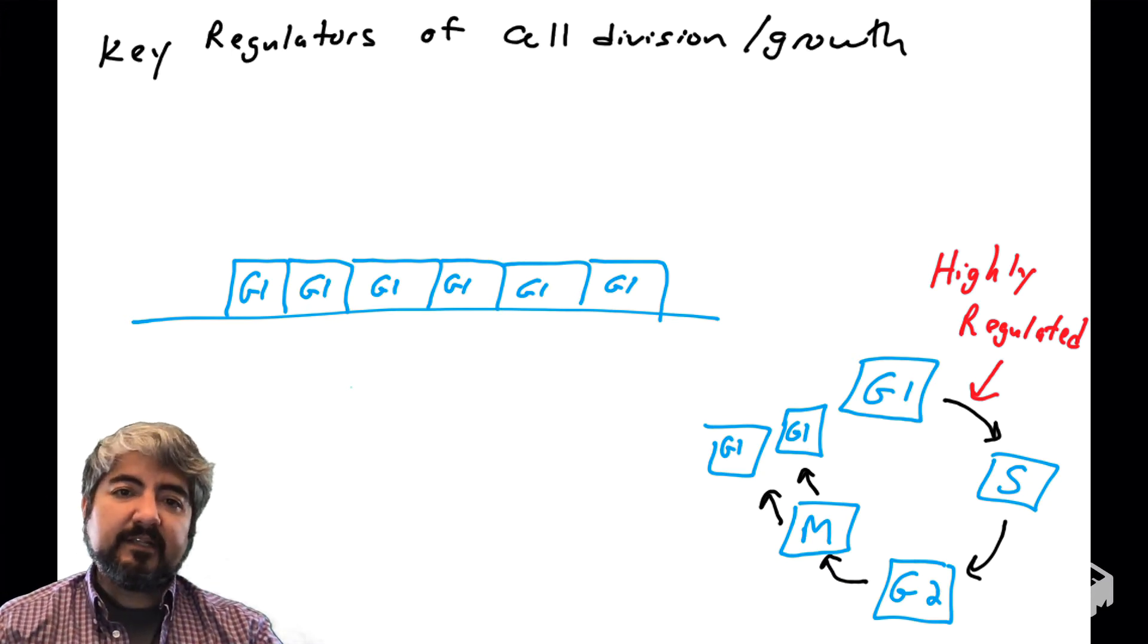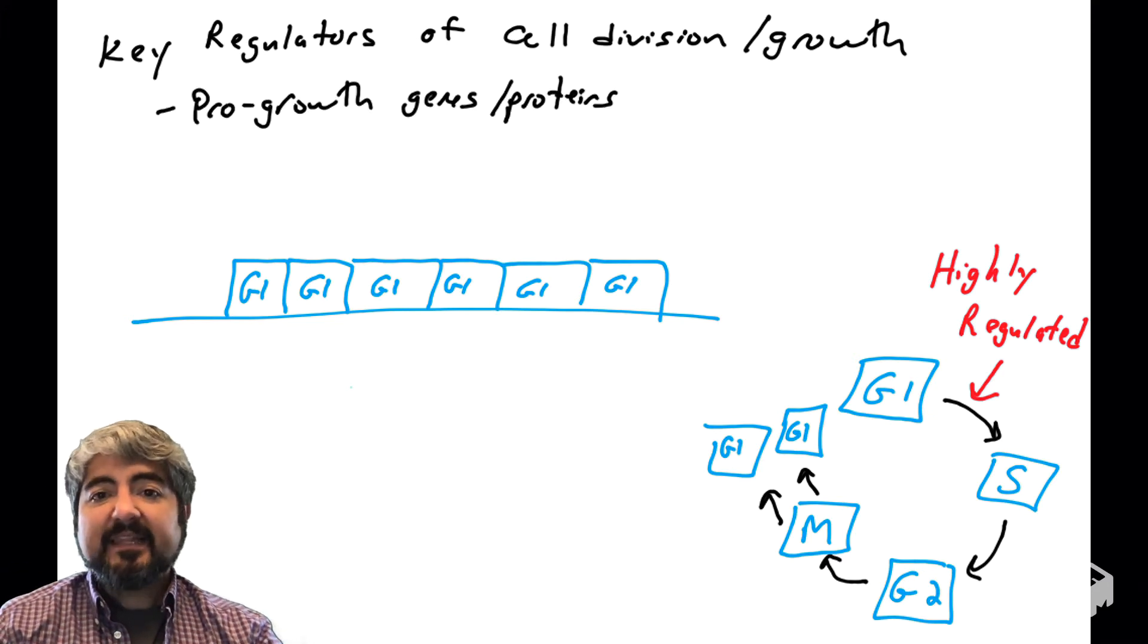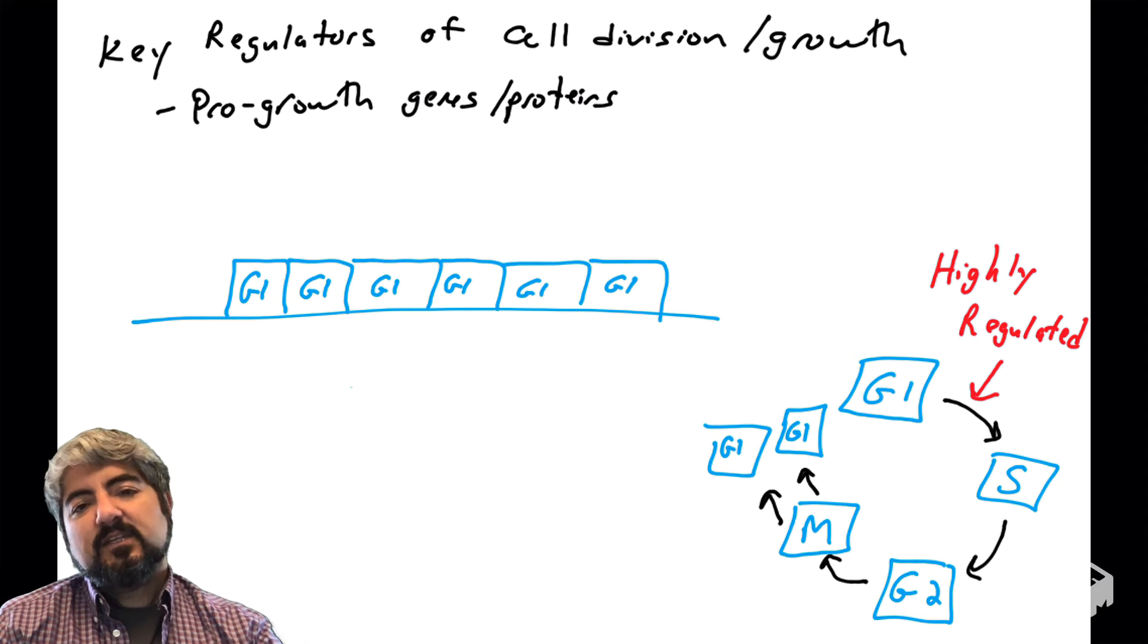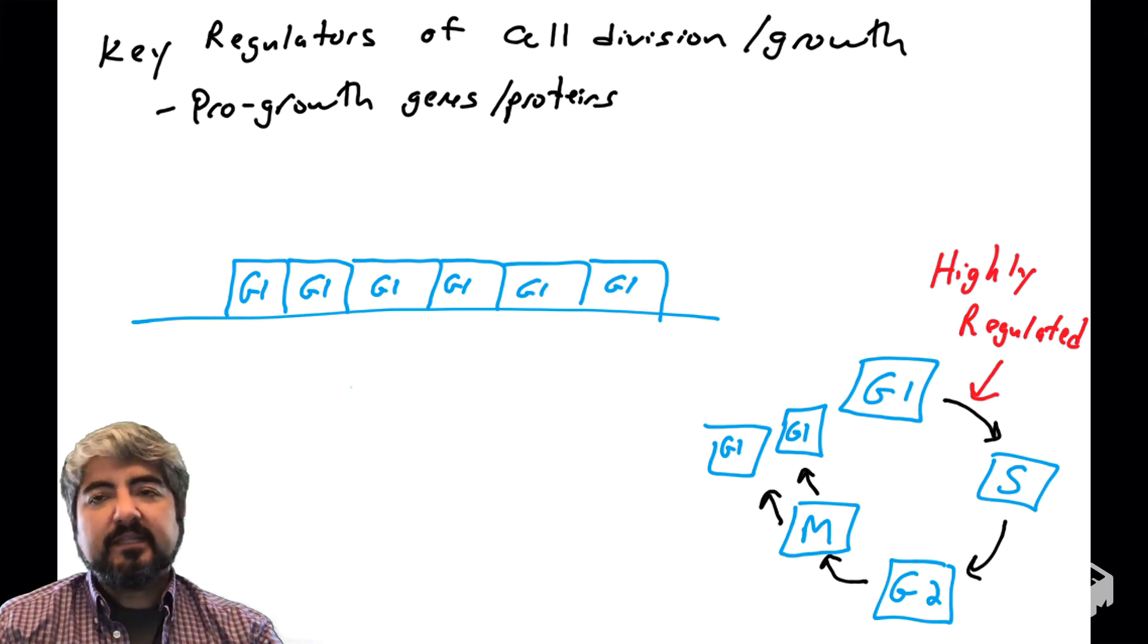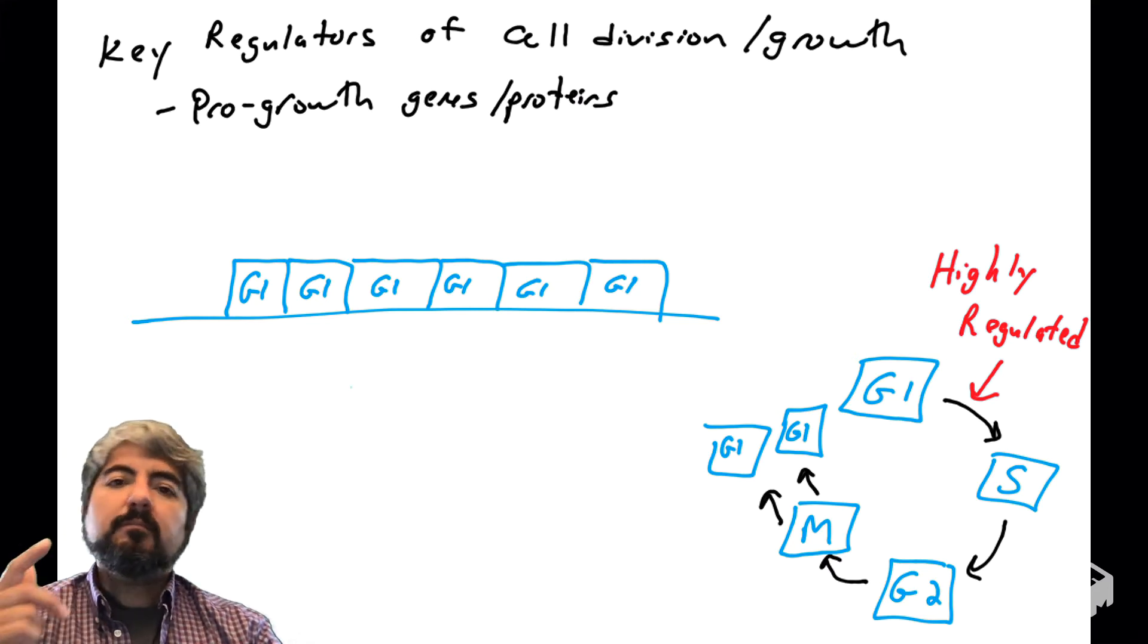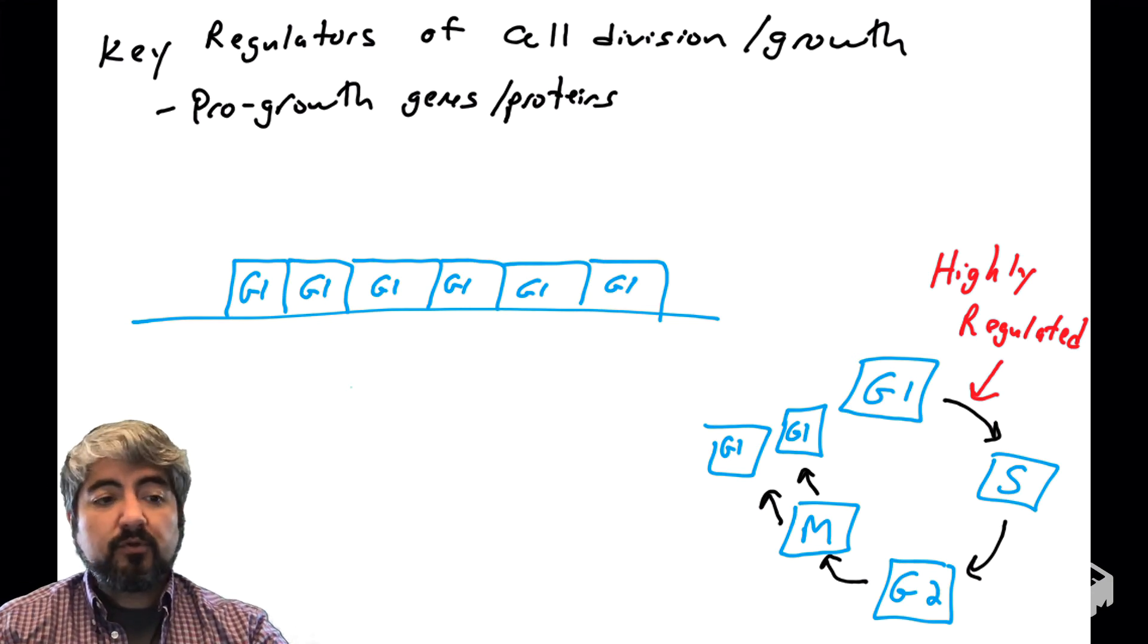So there are a lot of regulators of cell growth and division, and these regulators are defective in many human cancers. So we're just going to cover the basic classes of genes that are defective in human cancer, the ones that control normal cell growth and division. So there are many genes that produce proteins that promote movement through the cell cycle. We would call these pro-growth genes that would make pro-growth proteins, and they would promote movement through the cell cycle.